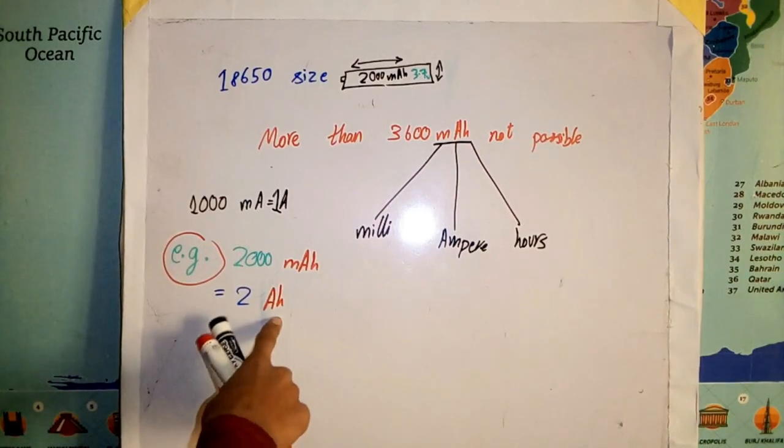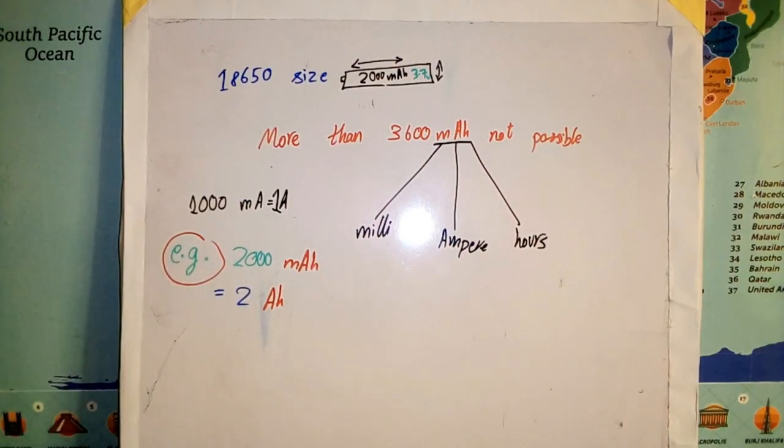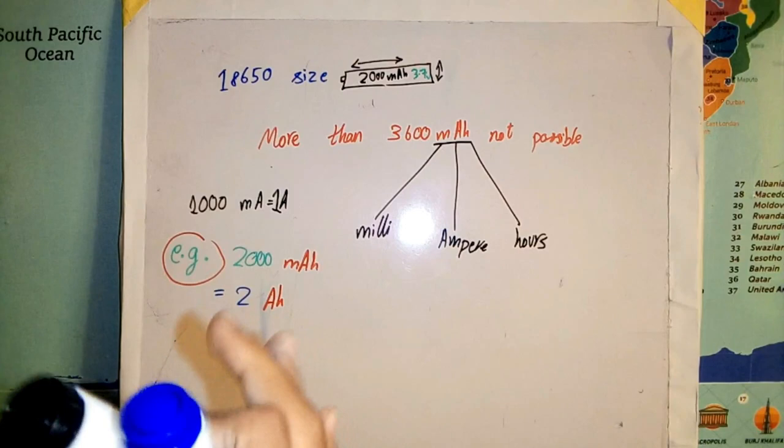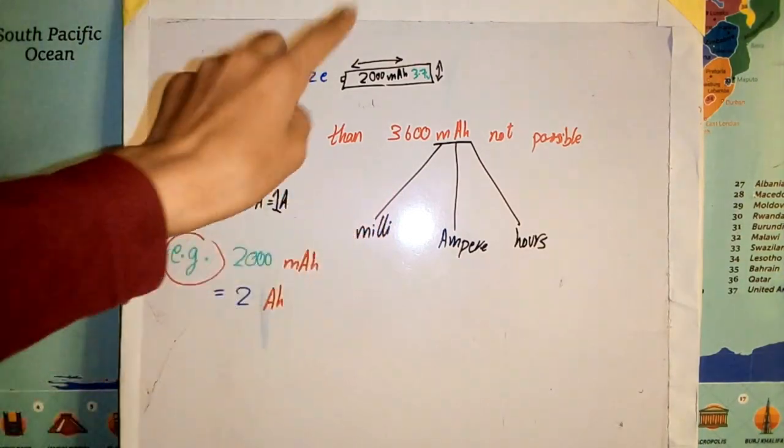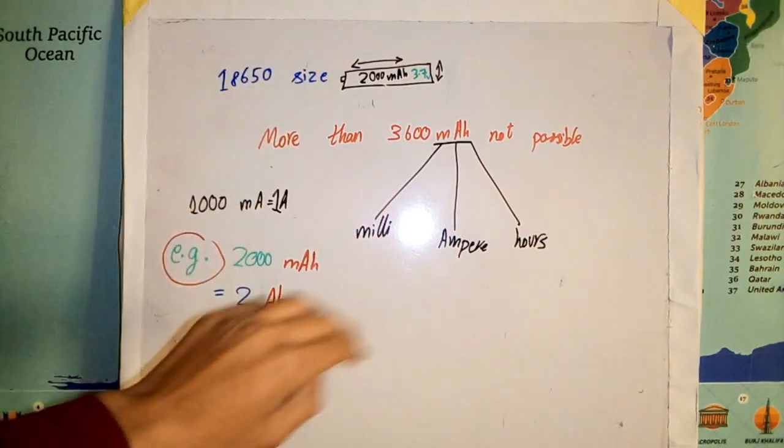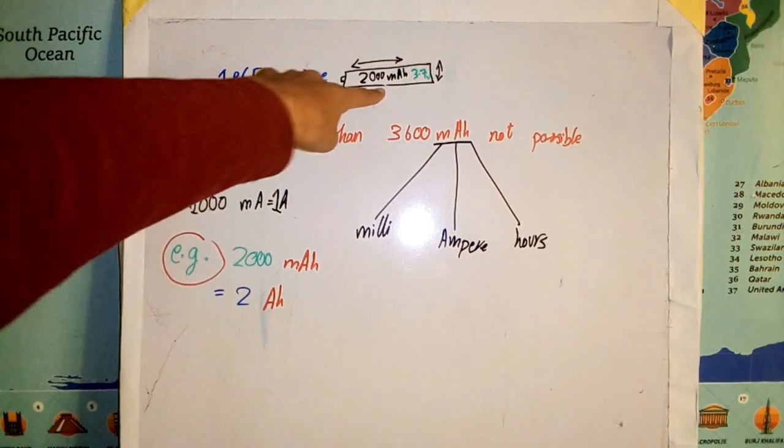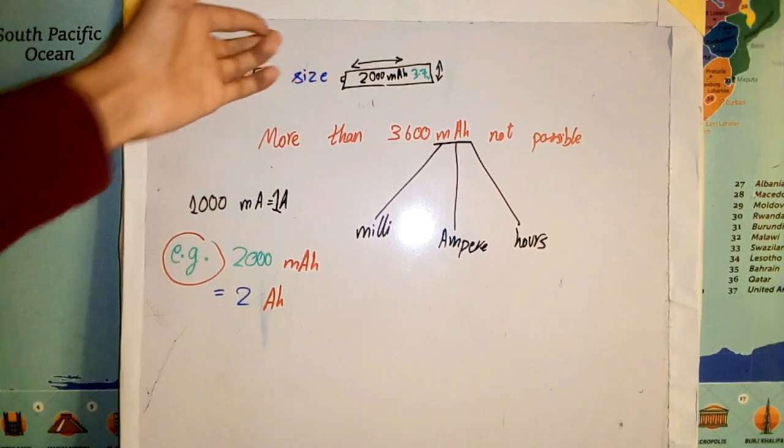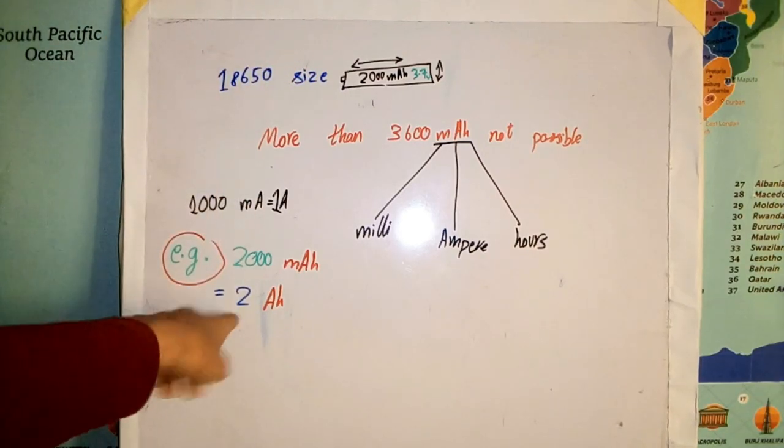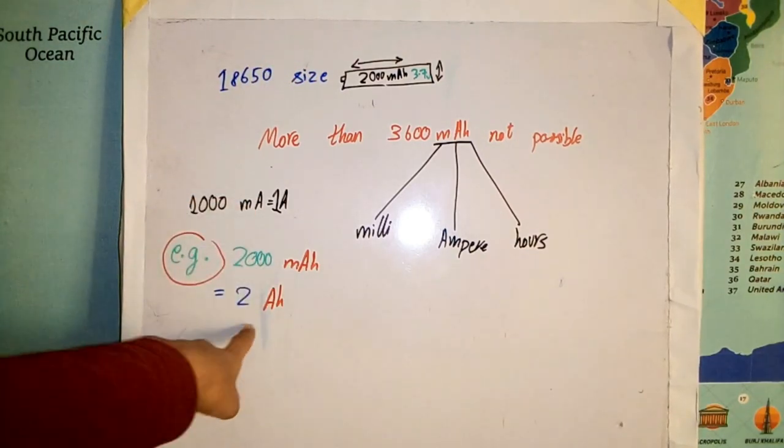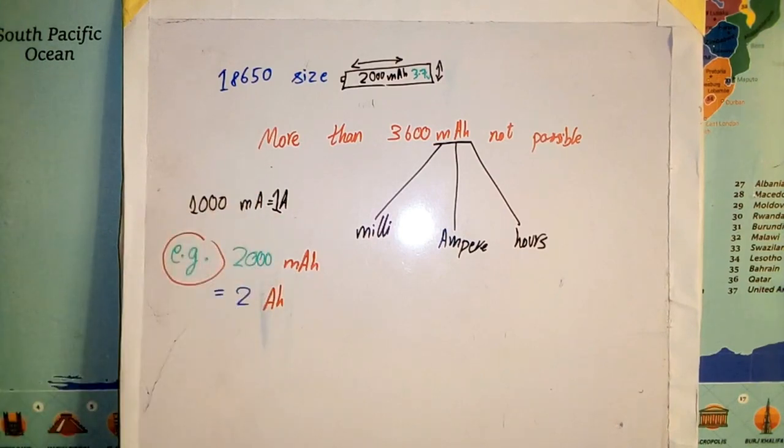That means if you put a 2 ampere drain on that battery, then it's going to take an hour to run flat. This is just an example, by the way. If you put a 1 ampere drain, it's going to take 2 hours. If you take a 4 ampere drain, it's only going to take 30 minutes, and so on. You got the point.